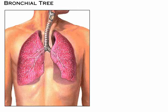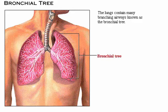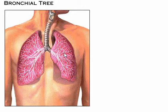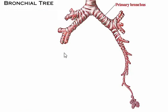Now let's continue to follow the airflow as it enters the lungs. The lungs contain many branching airways, which collectively are known as the bronchial tree. Air enters the lungs through the primary bronchi, which branch into secondary bronchi, which in turn branch into tertiary bronchi.